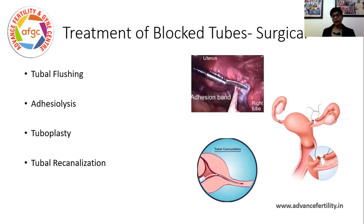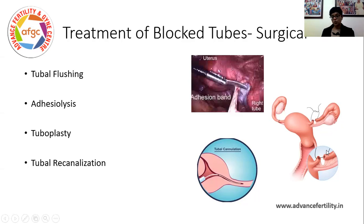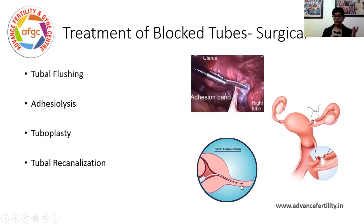Not all tubes which are blocked can be corrected surgically. The bad tubes and the frozen pelvis tubes cannot be corrected. But some tubes you can just flush and open out the blood and mucus matter. You can cut thick adhesions with the gut and omentum and free the tube. You can do corrective surgery — where there is damage you can remove the damaged section and sew it back. Surgeries for reversal of tubal ligation have given some good results. Tubal cannulization, where there is a block at the beginning and you put in a catheter to remove it, also leads to good surgical results.